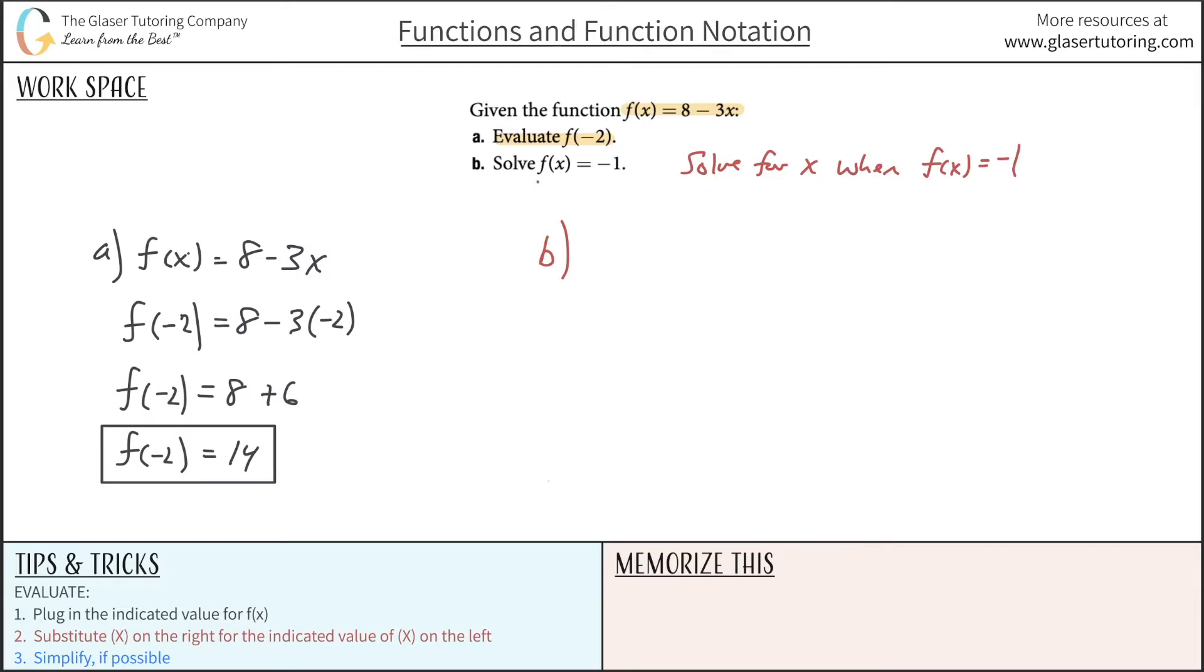Well, let's write down the function. So f of x is equal to 8 minus 3x. And they told you that f of x is negative 1. So anywhere you see f of x here, substitute a negative 1 in for it because they are equal.